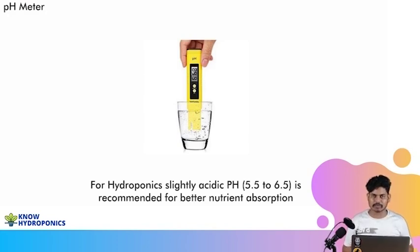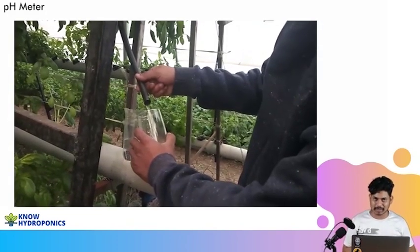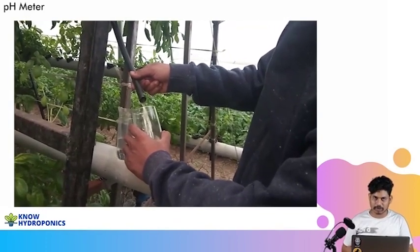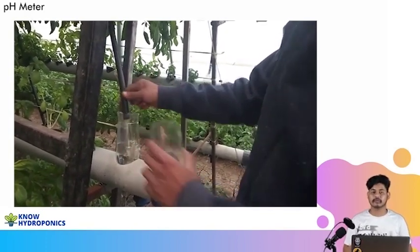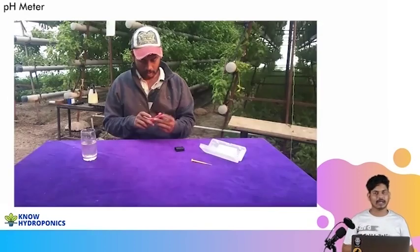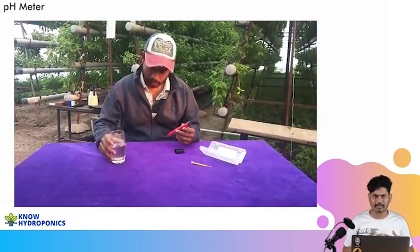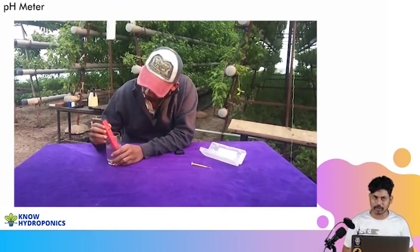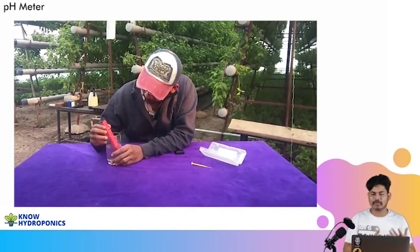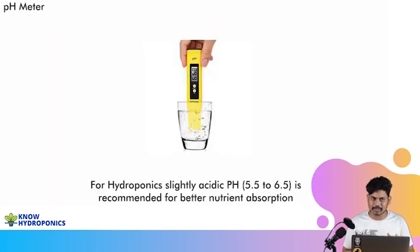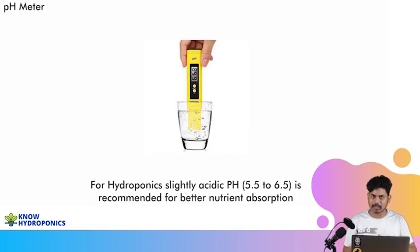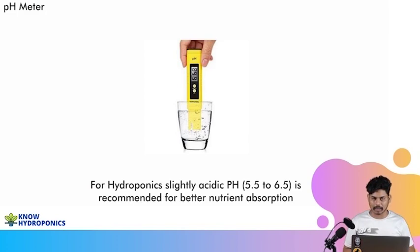We generally have to reduce that pH and get it back in the range of 5.5 to 6.5, and we make use of acid for this. In our farm, we use phosphoric acid for this purpose. We can also use nitric acid or sulfuric acid — these are the three acids that can be used to bring down the pH of water. Nitric acid and sulfuric acid are a little more costly compared to phosphoric acid, and phosphoric acid is much cheaper. Managing phosphoric acid is also much easier.